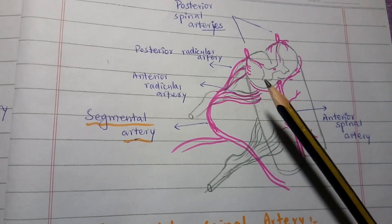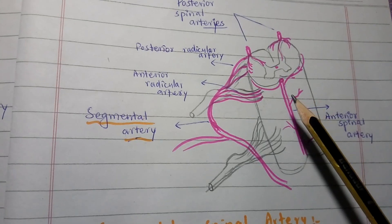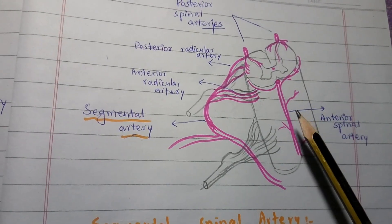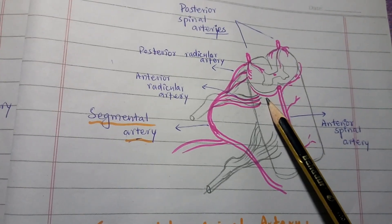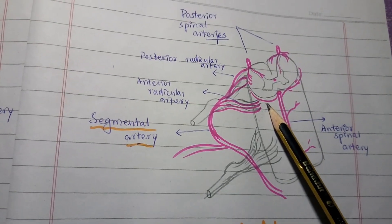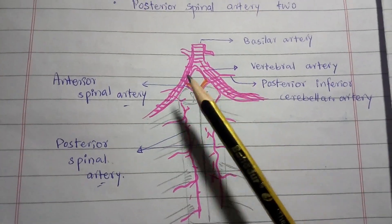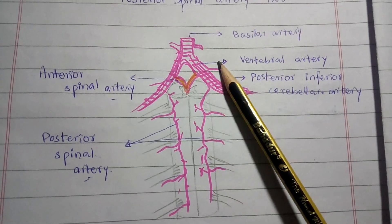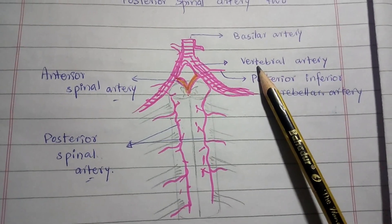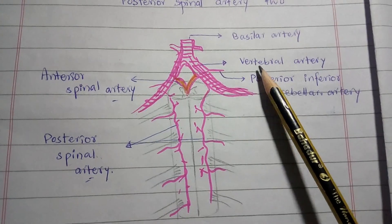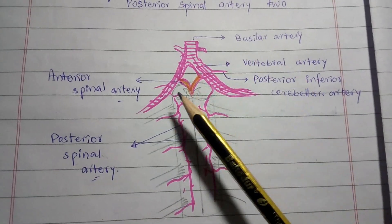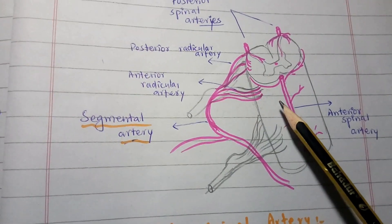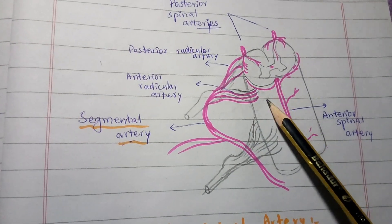The anterior spinal artery runs in the anterior median fissure. It is formed by the union of two small arteries arising from the vertebral artery — you can see this in the diagram. The anterior spinal artery supplies at least two-thirds of the spinal cord on the anterior side.